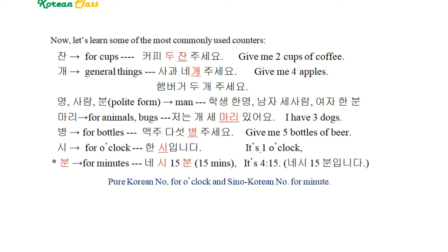시 is used for o'clock, so one o'clock is 한 시, three o'clock is 세 시. But for minutes, Sino-Korean numbers are used. So four fifteen is 네 시 십오분. It's four fifteen: 네 시 십오분.